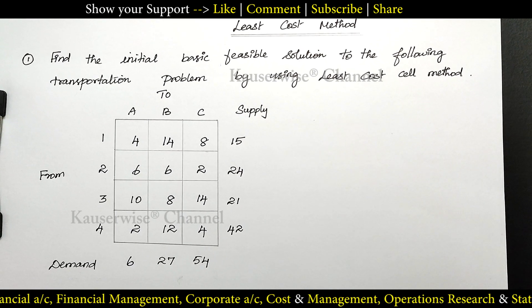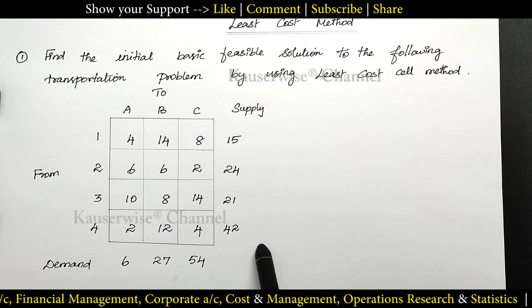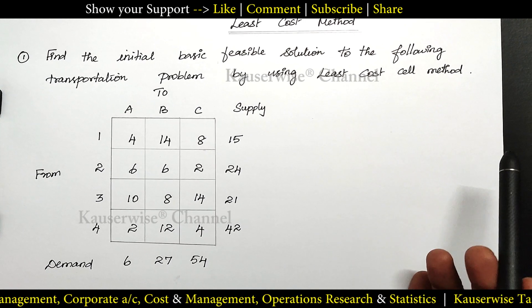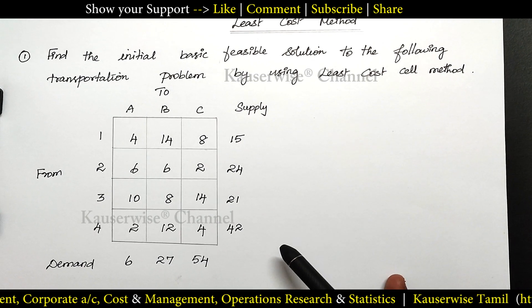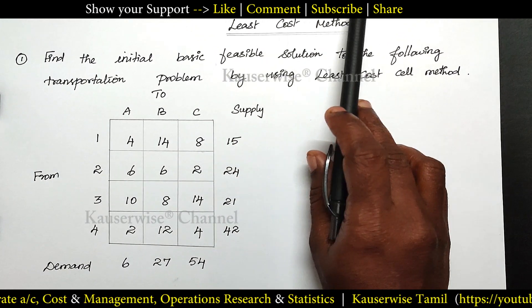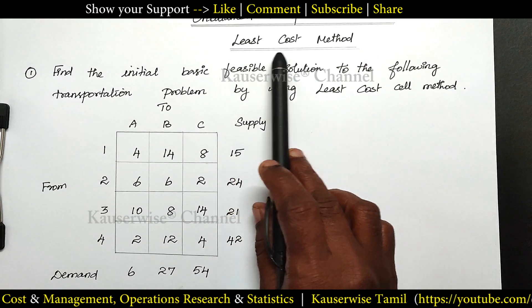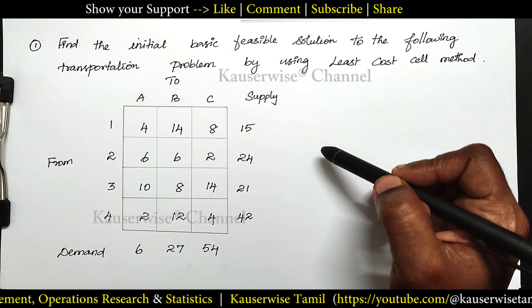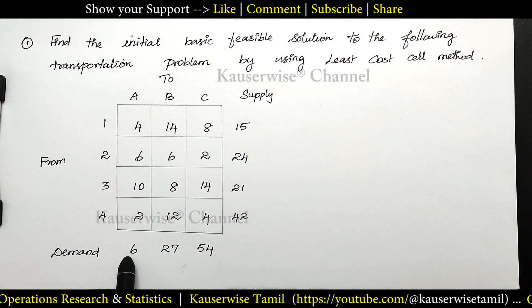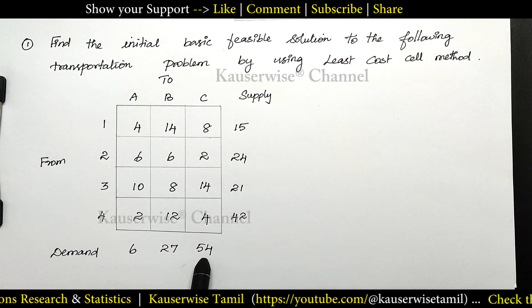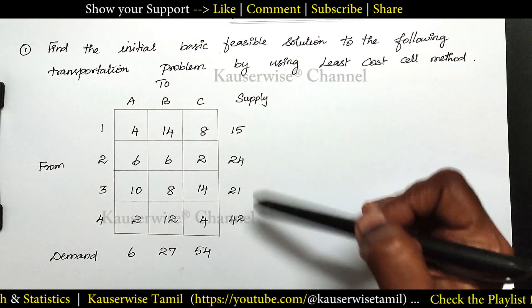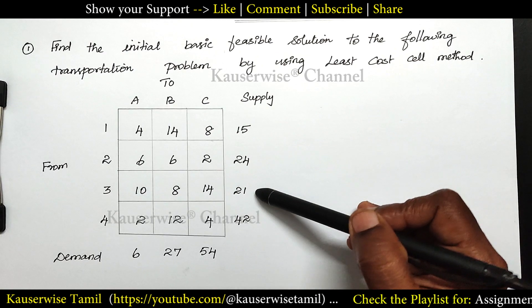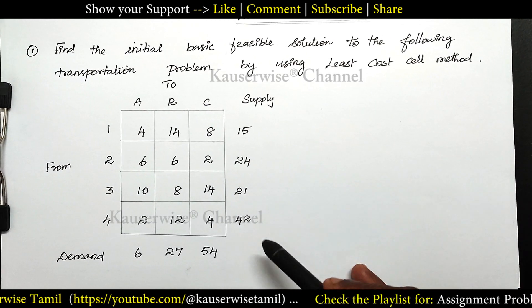For an unbalanced problem, first we need to convert it into a balanced problem, then we can proceed using any method to solve the transportation problem. Here we are going to use the least cost cell method. First let us check the total demand and supply. Demand: 6 plus 27 plus 54 equals 87. Supply: 15 plus 24 plus 21 plus 42 equals 102.